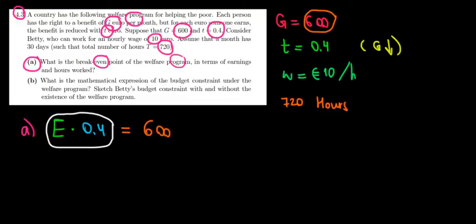That level of earnings is equal to 600 divided by 0.4. If we solve the math, that's equal to 1500 euros. So if we earn 1500 euros and we pay 40% of it, we are paying back to the government 600 euros that he gave us initially.